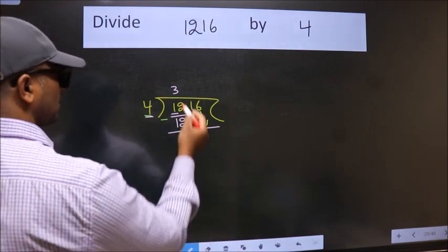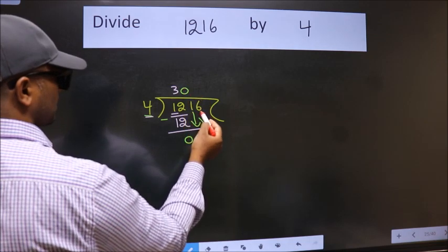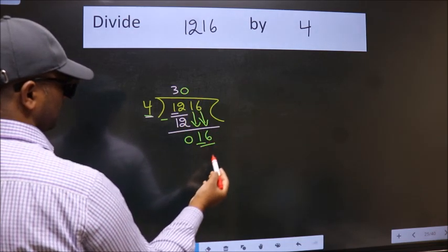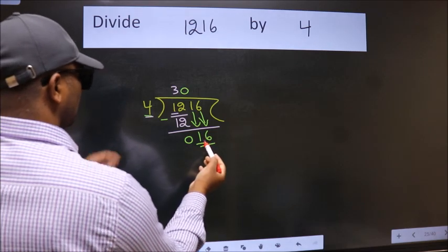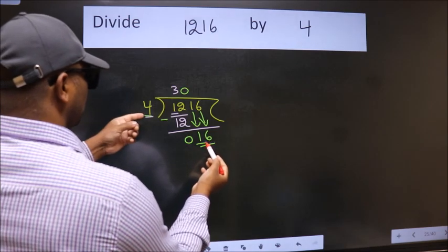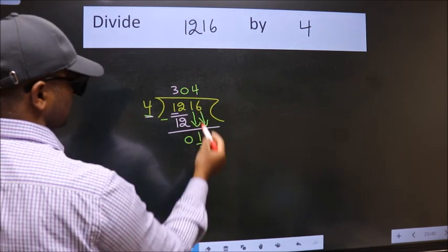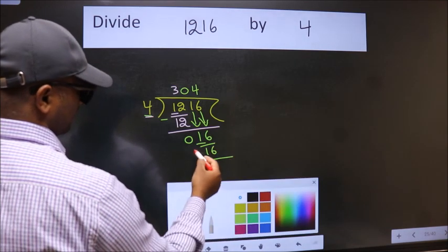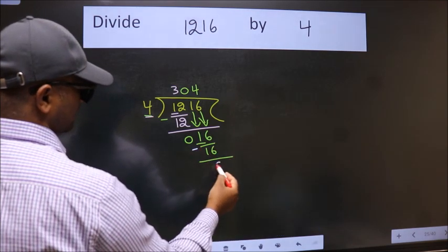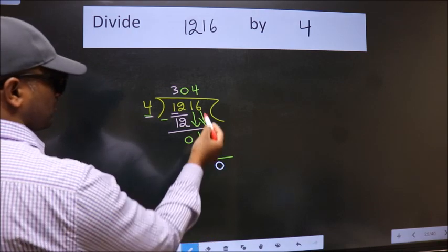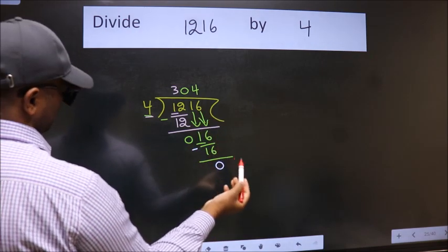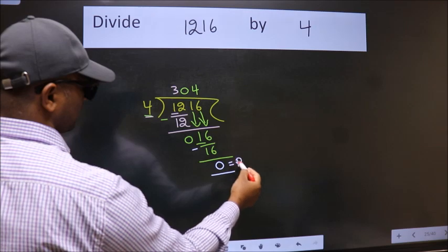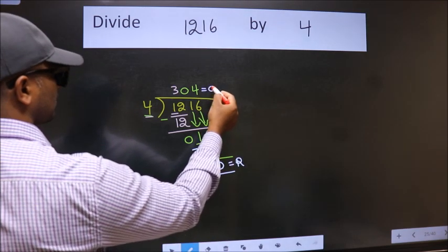Then only we can bring this number down, so we get 16. When do we get 16 in the 4 table? 4 times 4 is 16. Now we subtract — we get 0. No more numbers to bring down, so we stop here. This is our remainder and this is our quotient.